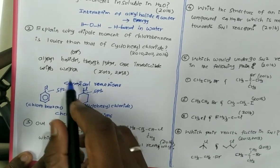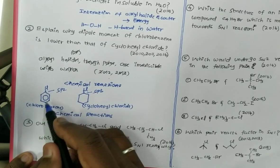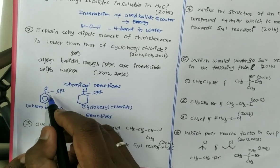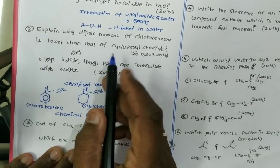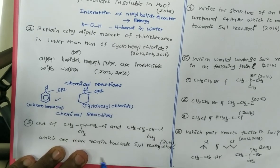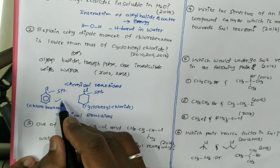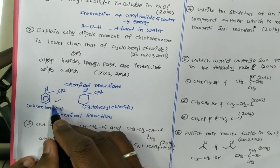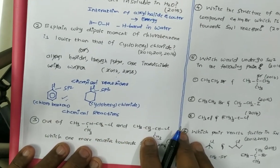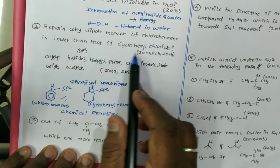Second, chlorobenzene has partial double bond character due to resonance, but cyclohexyl chloride has no partial double bond character. Because of these two reasons, the dipole moment of chlorobenzene is very less. Greater double bond character means shorter bond length, and shorter bond length results in lower dipole moment. So chlorobenzene has lower dipole moment compared to cyclohexyl chloride.